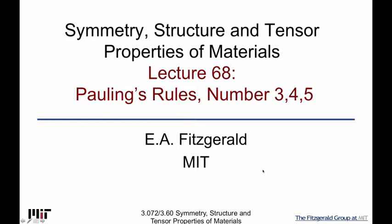This last lecture ends our discussion of the simple case of filling our space groups with ions and the rules that apply to creating the kinds of structures that could really exist in nature. Pauling's rules 3, 4, and 5 are generally not as important for most crystalline materials, although they're useful to think about, so we'll go over them.